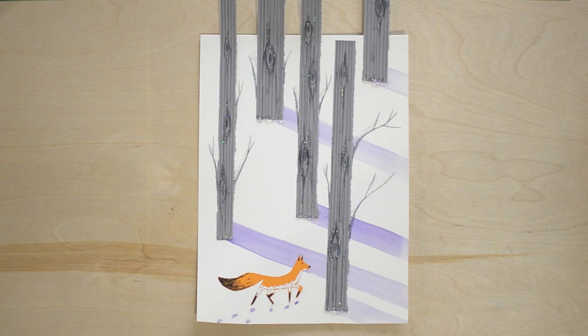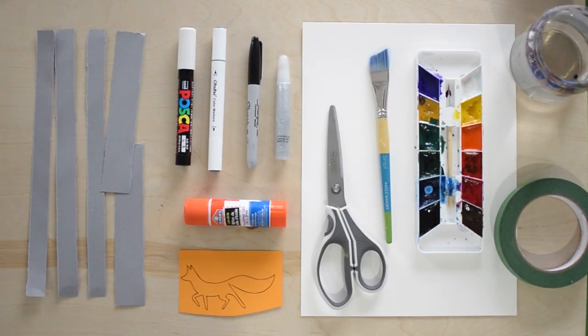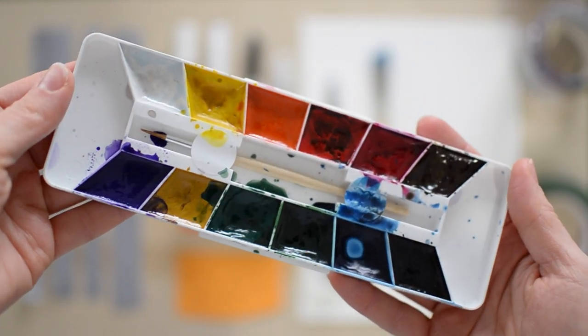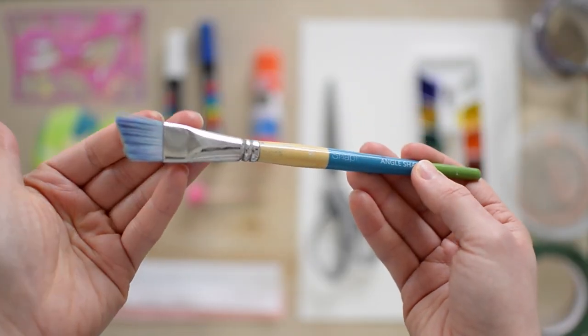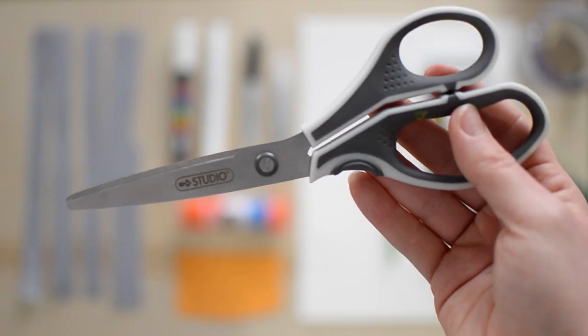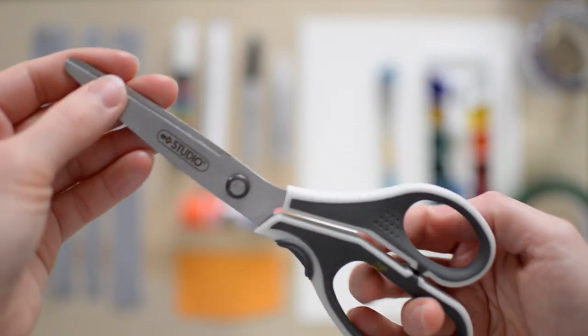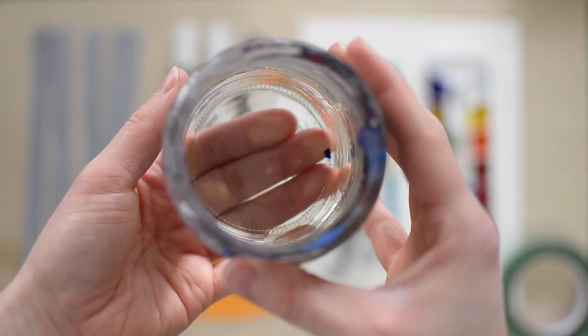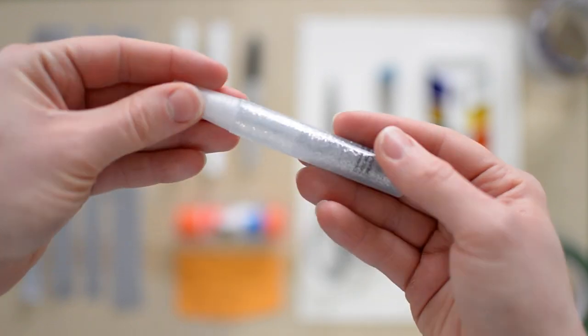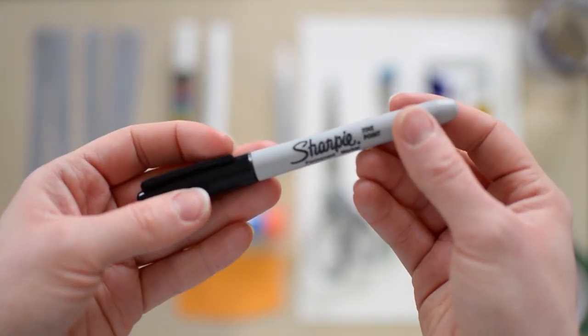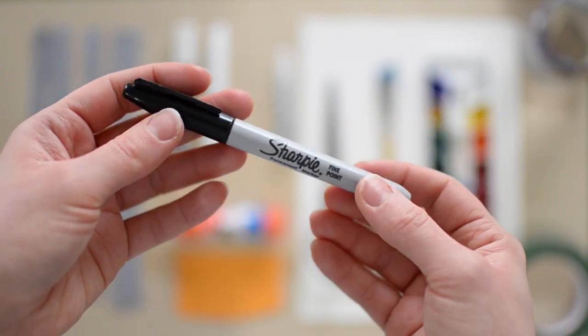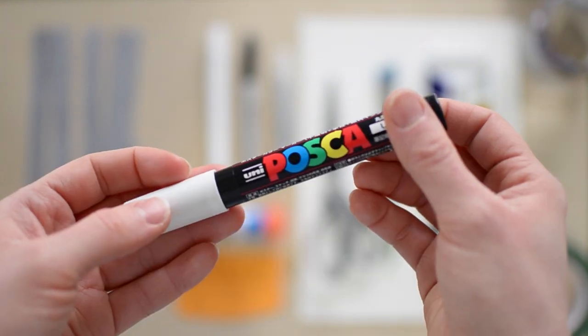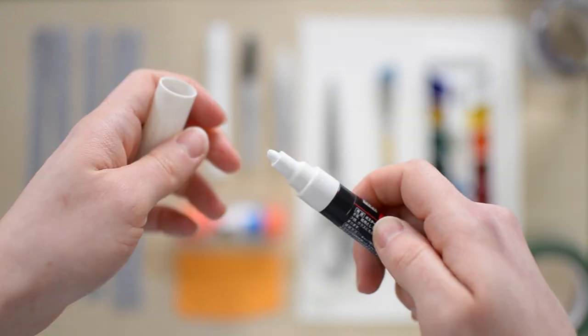Before we get started, I'm going to go over some of the supplies you're going to need. We'll start with a watercolor palette - I love this Yarka watercolor palette. Then you'll need a big bristle brush and a pair of scissors. We'll need some green painter's tape, some water, a glue stick, some silver sparkly glue, a sharpie, a water-based gray marker, and a white paint pen. I love this Posca brand.